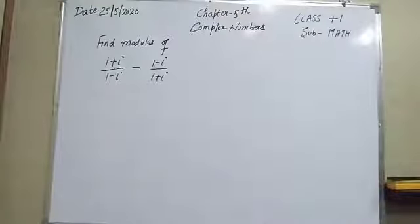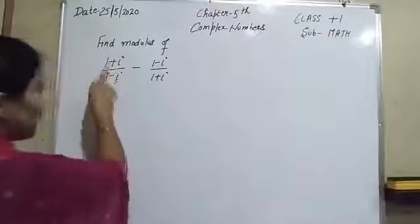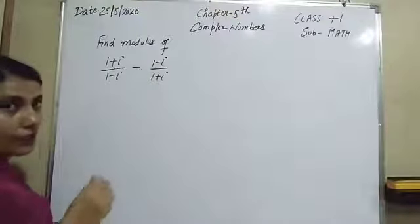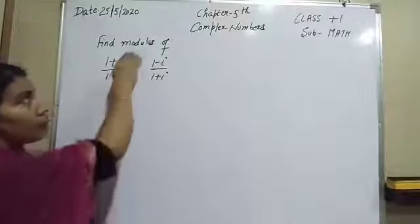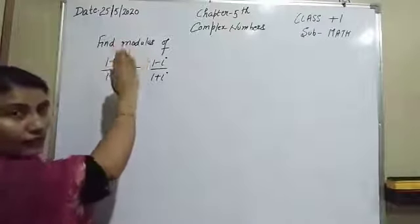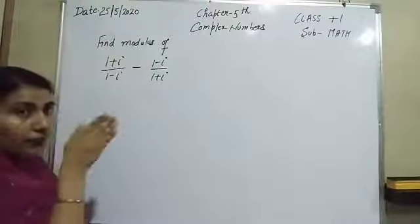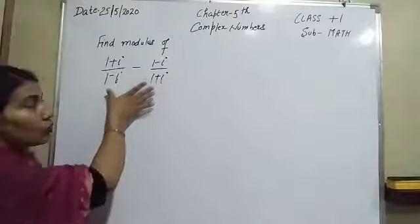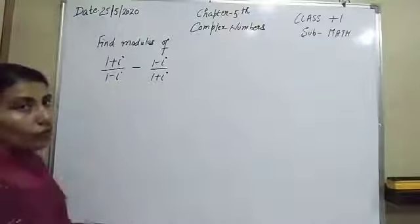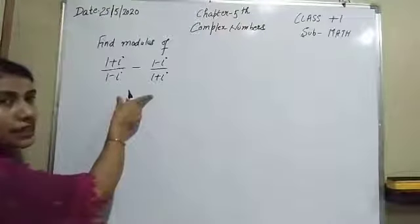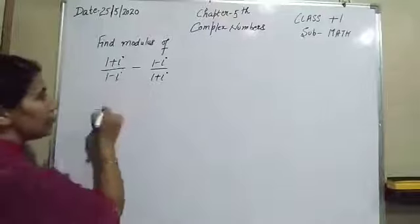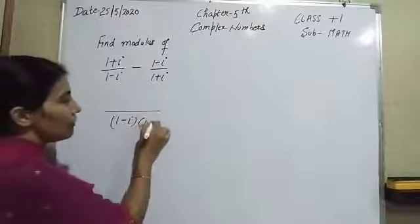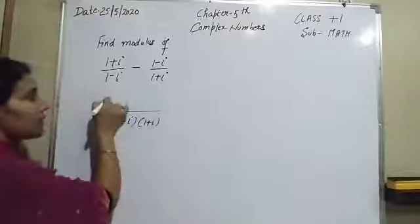Now come to the next question of this worksheet. We have to find the modulus of (1 plus eta) over (1 minus eta) minus (1 minus eta) over (1 plus eta). Again, whenever we have to find the modulus, firstly convert it into the form of a complex number. So take its LCM, which is (1 minus eta) times (1 plus eta). The numerator gives (1 plus eta) whole squared minus (1 minus eta) whole squared.